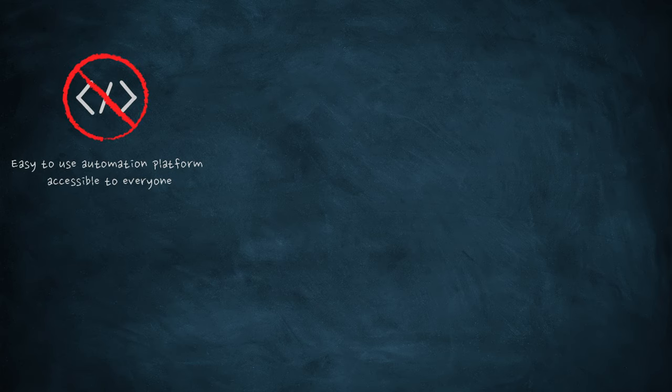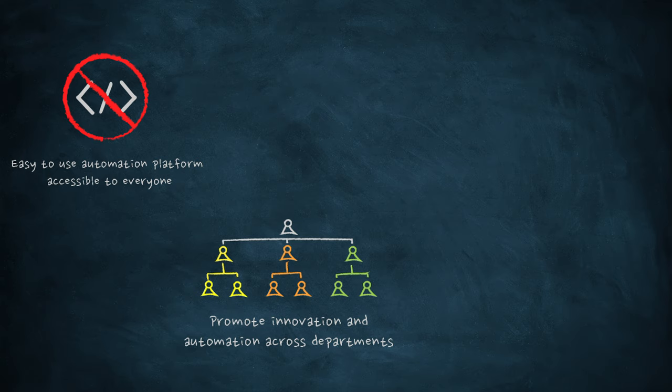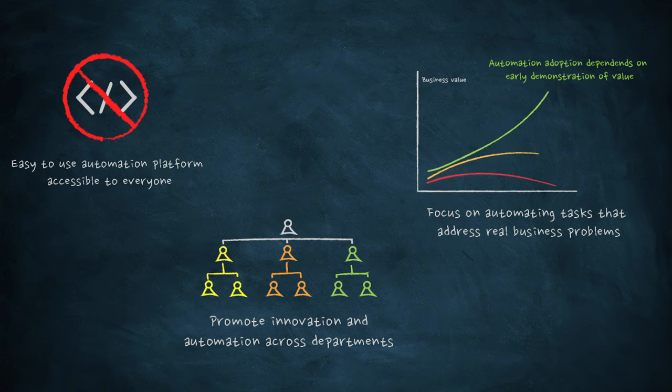The automation platform must be based on a low-code, no-code basis, so staff with a wider range of skills can easily use it to automate mundane tasks. The senior IT executives need to promote innovation and automation in departments or silos. Automation and its benefits must be aimed at solving real business problems, thereby increasing value and adoption.